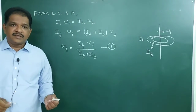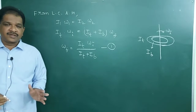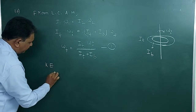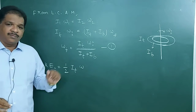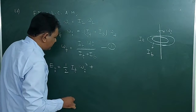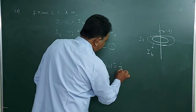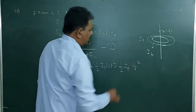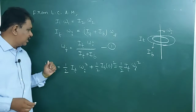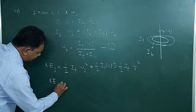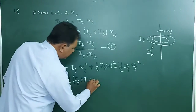They are asking for the loss of kinetic energy due to friction. Initial kinetic energy: KE_i = (1/2) · I_t · omega_i squared. The second disk is initially at rest, so it contributes nothing. Final kinetic energy: KE_f = (1/2) · (I_t + I_b) · omega_f squared.